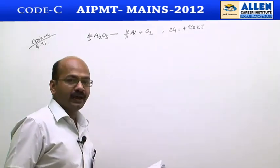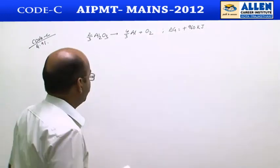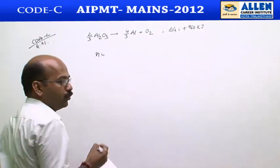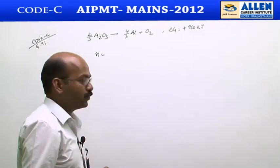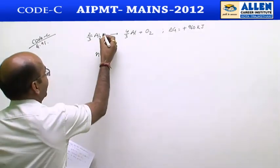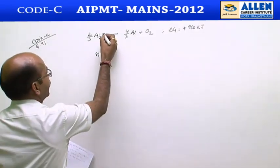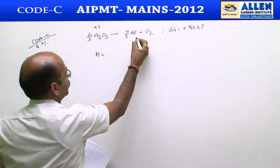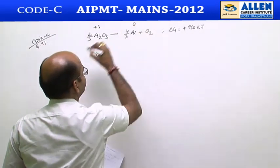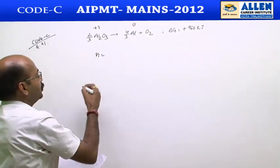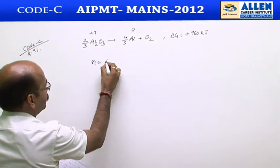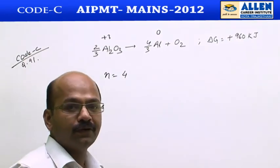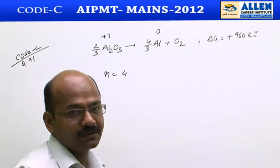We want to calculate the potential difference, so first we should calculate N — the number of moles of transferred electrons. The oxidation number of aluminium in Al₂O₃ is +3, and in elemental aluminium it is 0, so the change in oxidation number is 3. However, with 4/3 moles of aluminium, the number of moles of transferred electrons is 4.